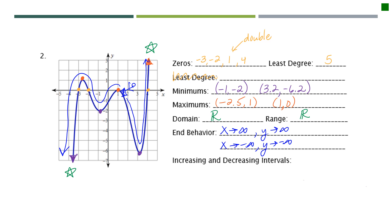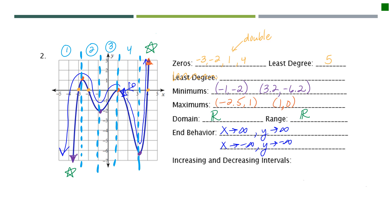For increasing and decreasing intervals, I'm drawing dotted lines through all the maxes and mins. I have five sections here. The intervals will alternate between increasing and decreasing.